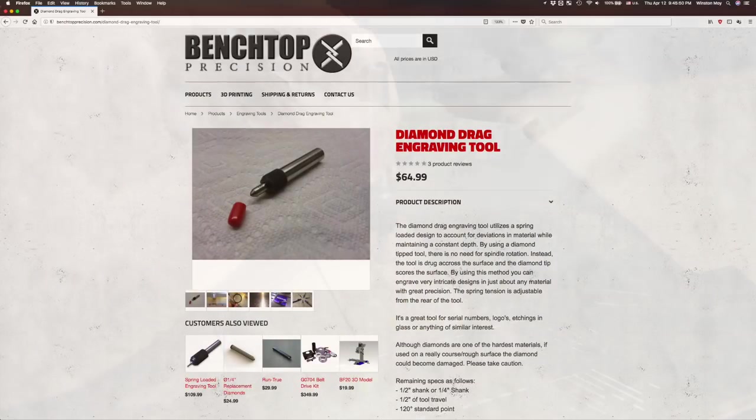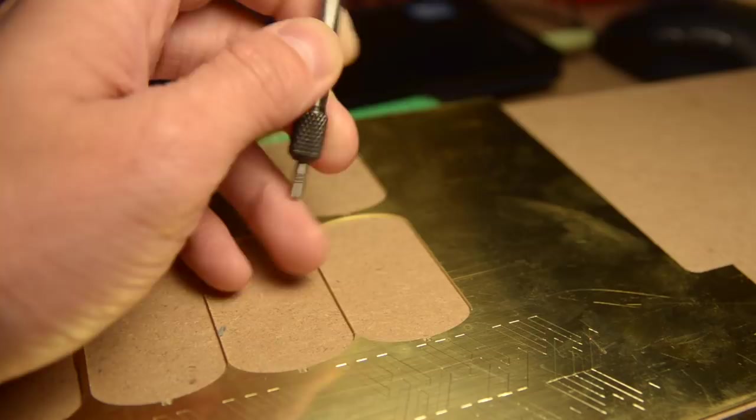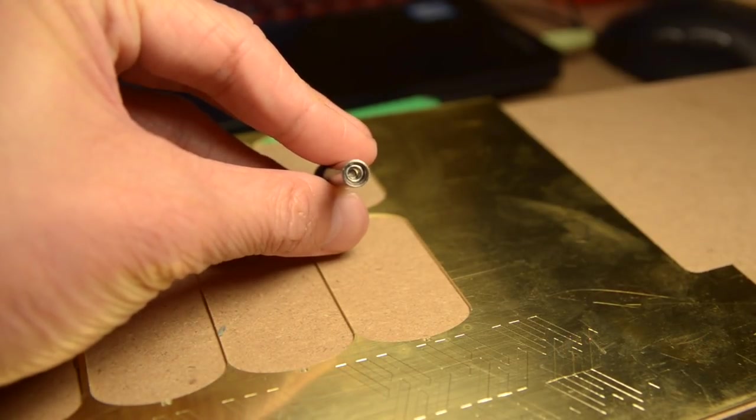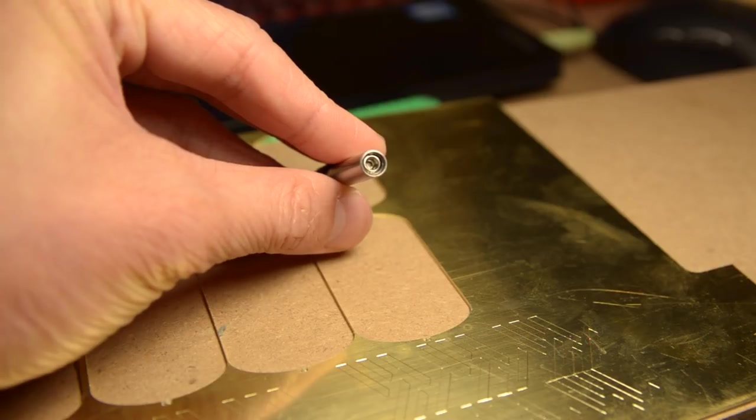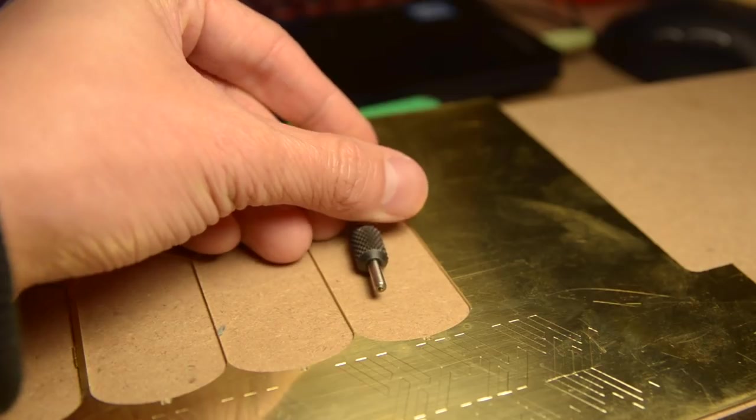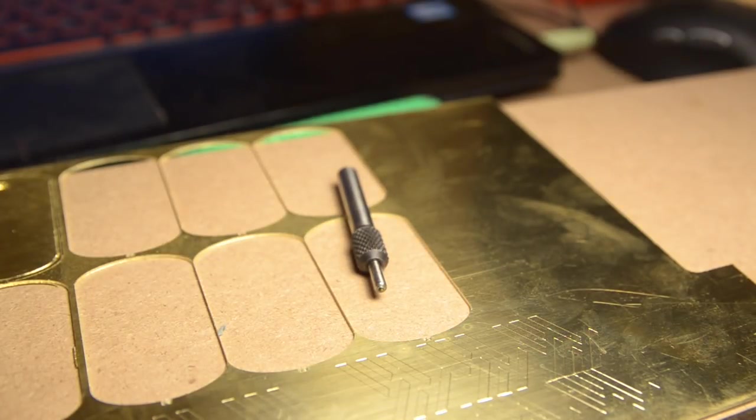The engraving tool I'm using is from Benchtop Precision. I was tipped off to this one in the unofficial Shapeoko and Nomad group on Facebook, and it's one of the more affordable ones I've seen. Not only does it come with a quarter-inch shank and a choice of tip angles, but it also has a screw in the back for adjusting preload, a feature sometimes missing on cheaper tools.